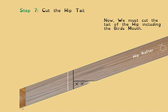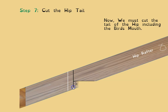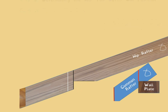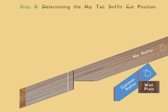Now the hip is pointed at the fascia end and the bird's mouth is cut away. Remember with any bird's mouth, the seat cut and the heel cut must be 90 degrees to each other. If you're on site and they don't look 90 degrees, something is wrong — check it. 99.9% of the time they must be 90 degrees, because the top surface and edge of the wall plate are square to each other.